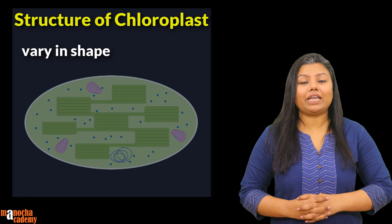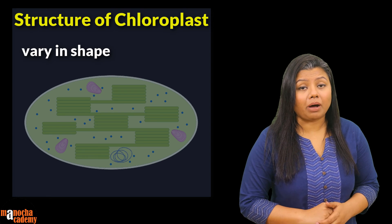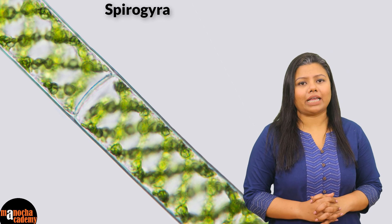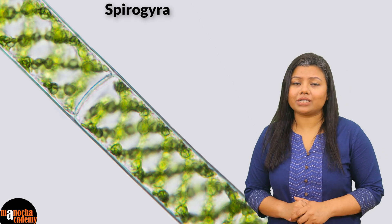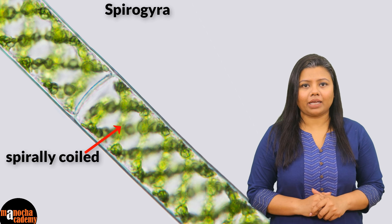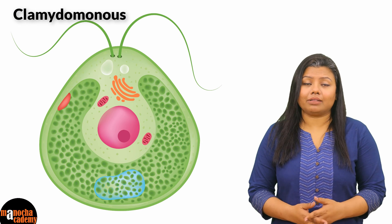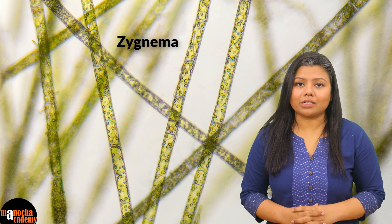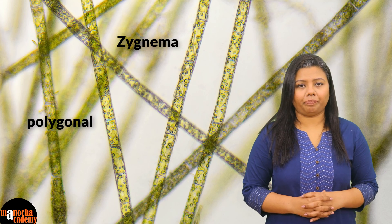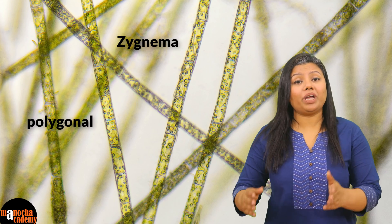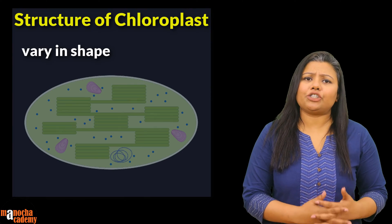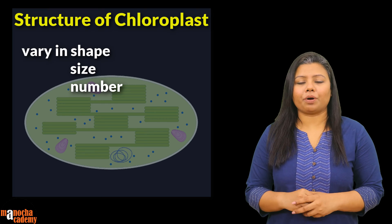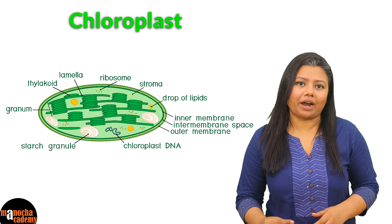The chloroplasts vary in shape as well. In spirogyra we find a single chloroplast which is spirally coiled. In chlamydomonas there is a single chloroplast which is cup shaped. In zygnema we find chloroplasts which are polygonal in shape. So depending on which species we are talking about, the shape, size and number of chloroplasts vary. Let us talk about a typical chloroplast of a eukaryotic cell.